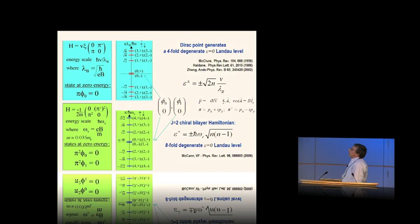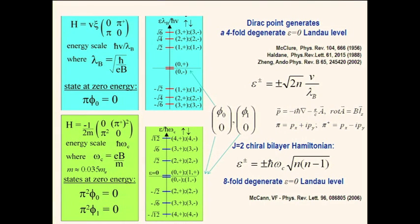All other Landau levels are fourfold degenerate both in the monolayer and the bilayer. In the monolayer the largest separation is between the zero level and the next one, and the spacing has a square-root dependence on magnetic field, with levels becoming denser at higher energies. In the bilayer, the Landau level fan plot looks similar to usual semiconductors — at high Landau level numbers it is almost linear in the level number and also linear in magnetic field.